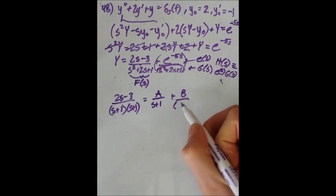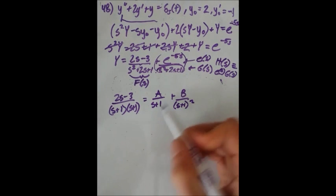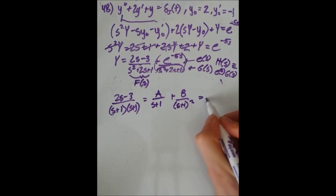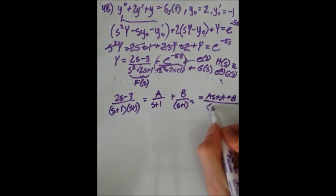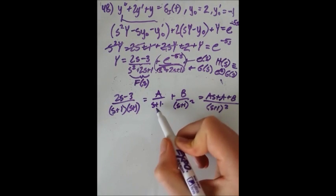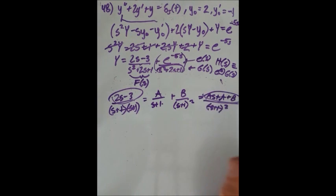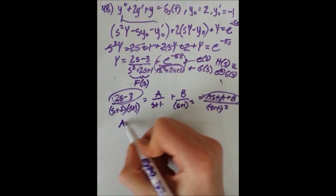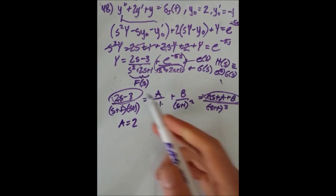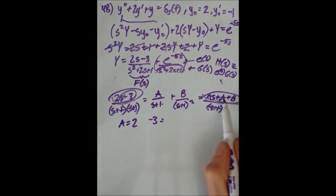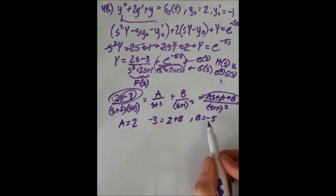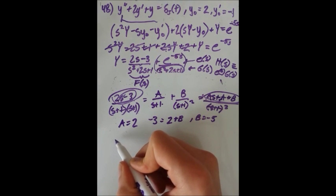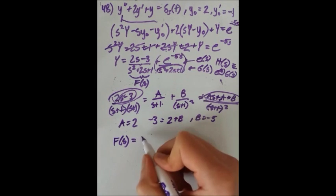Using one constant per power of the denominator allows us to get cross terms correctly. Finding the common denominator gives A(s plus 1) plus B all over (s plus 1) squared. Matching coefficients of s: A equals 2. Then matching constant terms: minus 3 equals A plus B, so minus 3 equals 2 plus B, giving B equals minus 5. So F(s) equals 2 over (s plus 1) minus 5 over (s plus 1) squared.